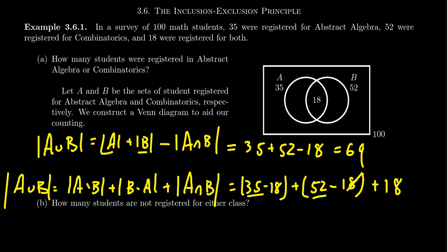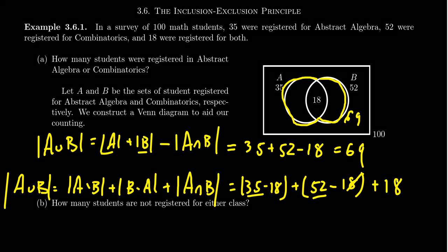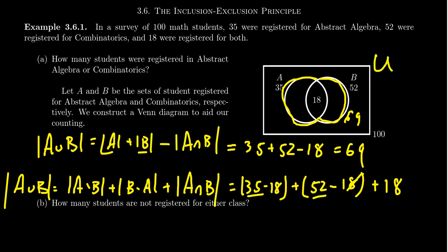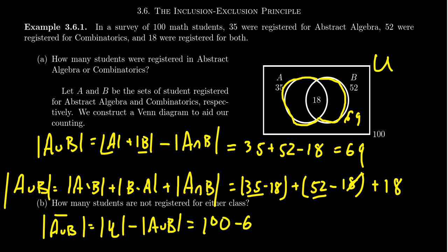We could also ask: how many students are not registered for either of these classes, among the 100 students surveyed? What we're looking for is the cardinality of (A∪B) complement. We take the cardinality of the universe minus the cardinality of A∪B: 100 minus 69 gives 31. Therefore, 31 math students who were surveyed were in neither of these classes.